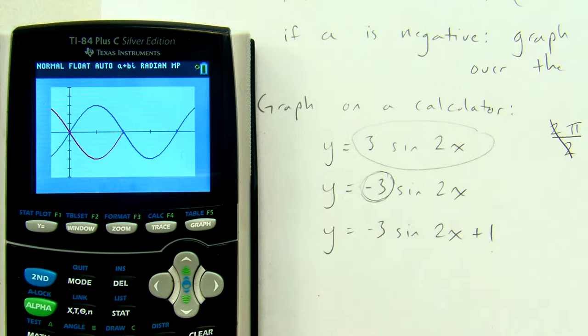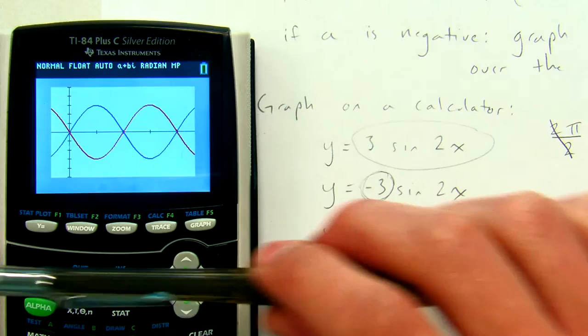So this is negative 3 sine of 2x. It looks a little bit like DNA, doesn't it? Double helix.